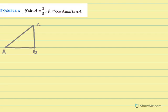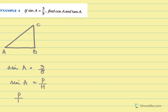If sine A is 3 by 5, find cos A and tan A. So it's given to us sine A is 3 by 5. And we know sine A is perpendicular over hypotenuse. So when we compare both these, we can say perpendicular over hypotenuse is 3 by 5.